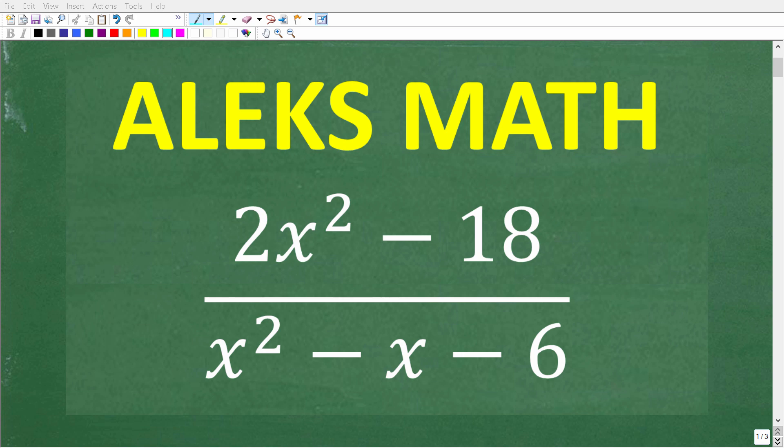If you are fully prepared for the ALEKS Math placement exam, this should be a very easy problem to solve. Let's take a look at the question. We have 2x squared minus 18 over x squared minus x minus 6, and what we're trying to do here is simplify this expression. Now, if you think you know the answer, put that in the comments section. I'm going to fully explain this in just one second.